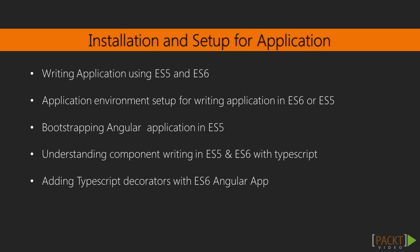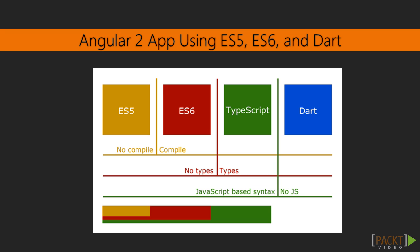After this, we will be able to understand that using ES6 and TypeScript, a lot of things have been simplified for the development process. With Angular 2.0, we have different options to write the code — ES5, the current version of JavaScript, and ES6, the coming version of JavaScript. Dart is another option to write the same application, but you will find it totally different from JavaScript.